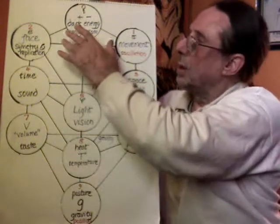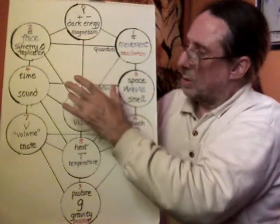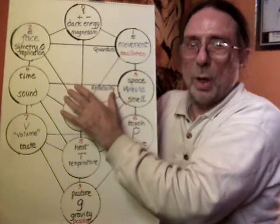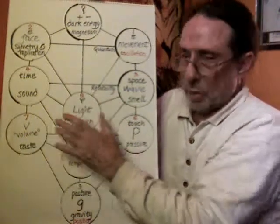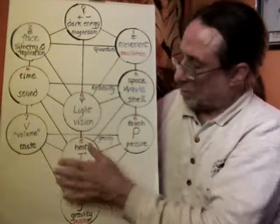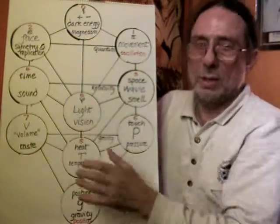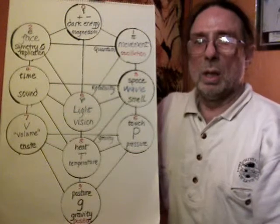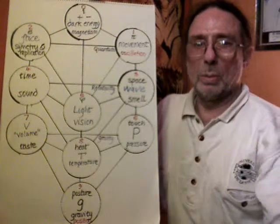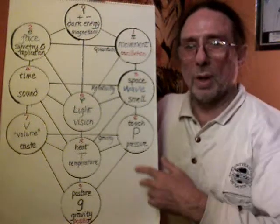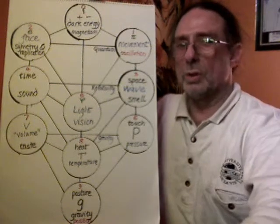So quantum gravity, quantum theory of light, the wave form of light, PV over T — all of this is contained in this one structure, which can be amplified in the other videos on the unified field theory.